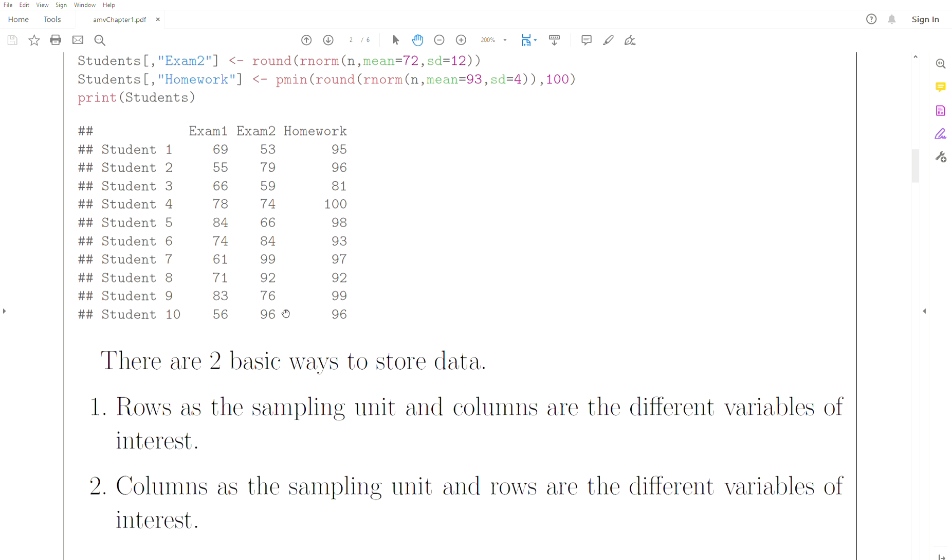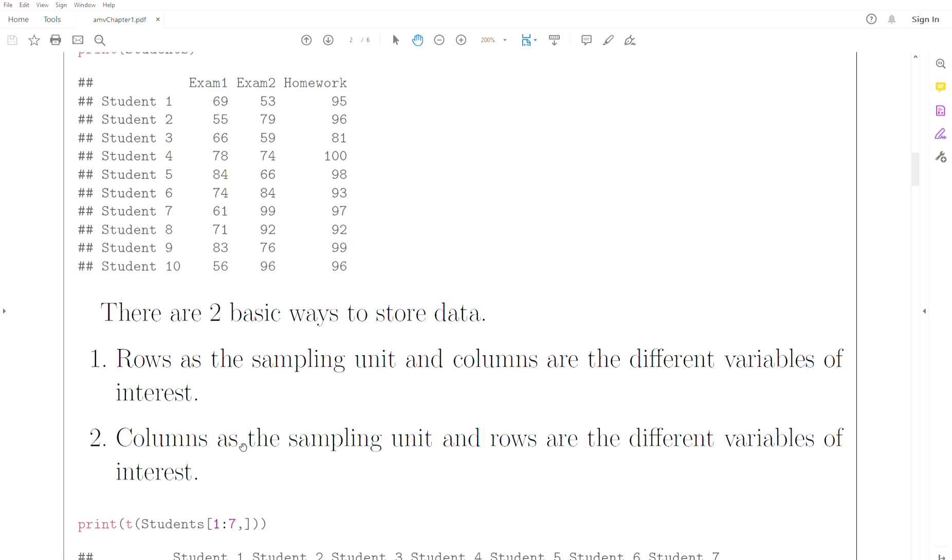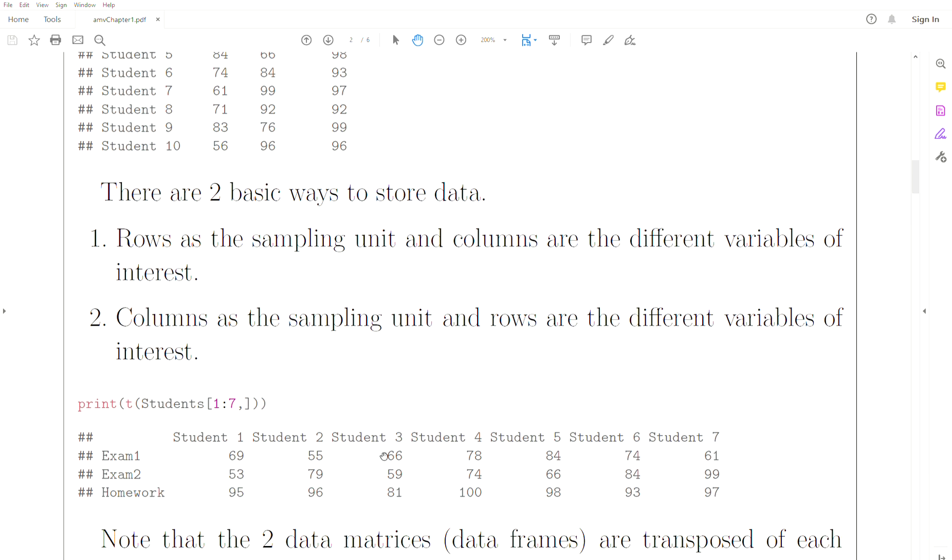Now, if we take the transpose - and that's a matrix algebra terminology which we'll cover in a later lecture - the columns can be the sampling unit. In this case, student one, two, three, four, five.